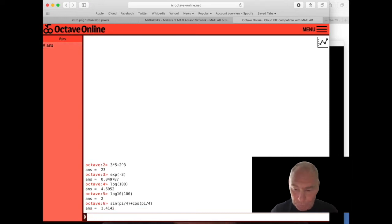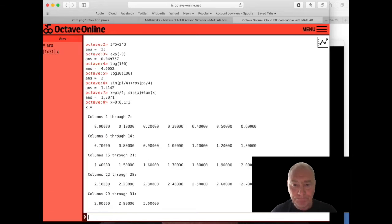We can do even more complicated things. We can do trigonometry. We can do sine of pi over 4 plus cos pi over 4. We can have variables. We can say that x is equal to pi over 4 and then we can type sine x plus tan x. Great. We can do more than that. We can set up a whole range of values of x. We can say let x go from 0 in steps of 0.1 to let's say 3. There we are. 0.1, 0.2, 0.3, 0.4 all the way up to 3.